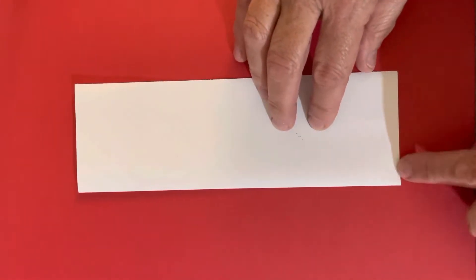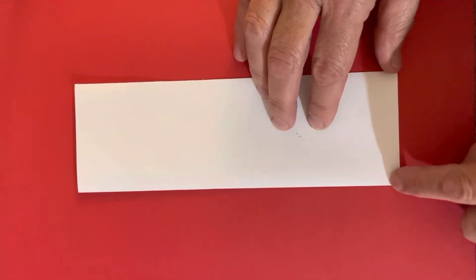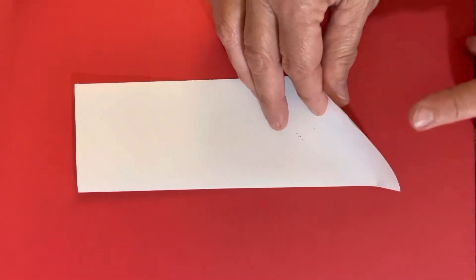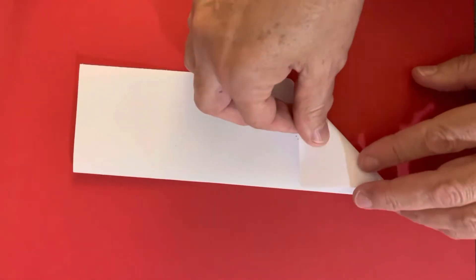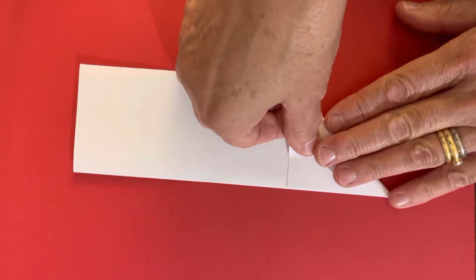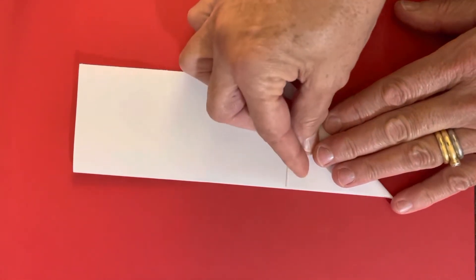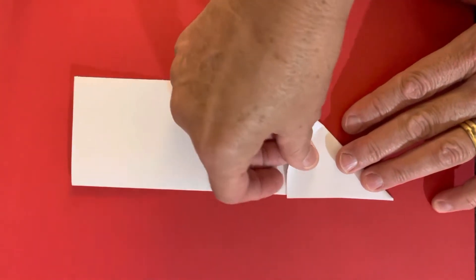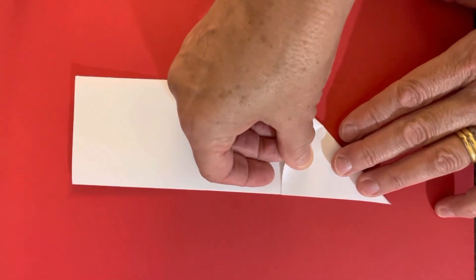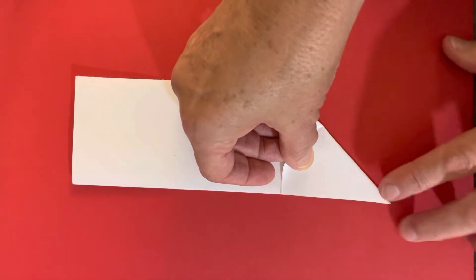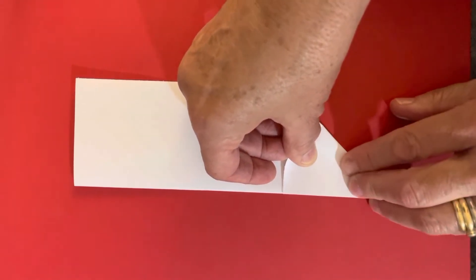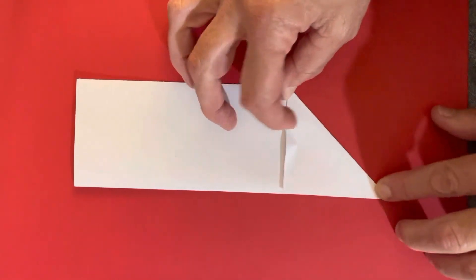Then this has to go equal to that or even with that. So this side matches this side. If you match it perfectly, it'll come to a point. If you go over, it won't. So I'm matching it perfectly all the way along. And squeeze it down.